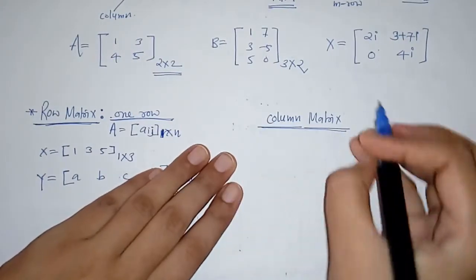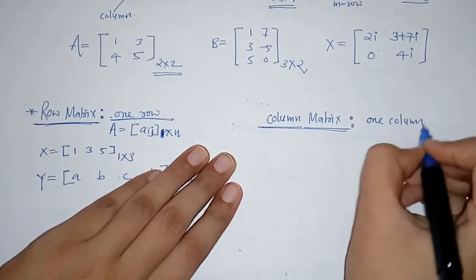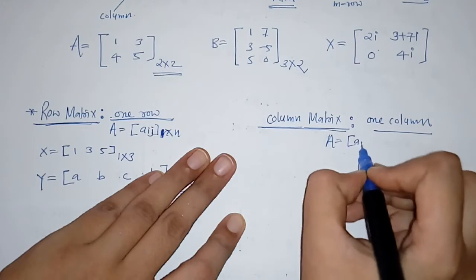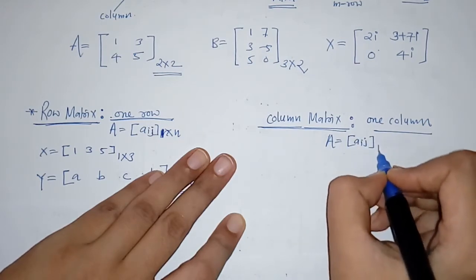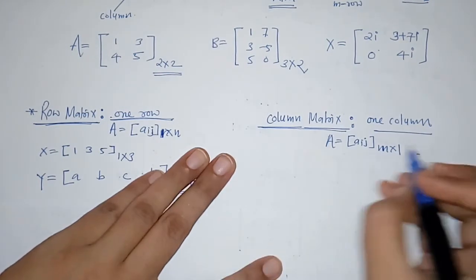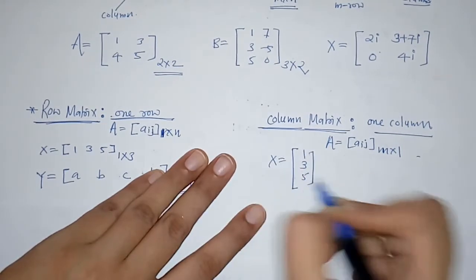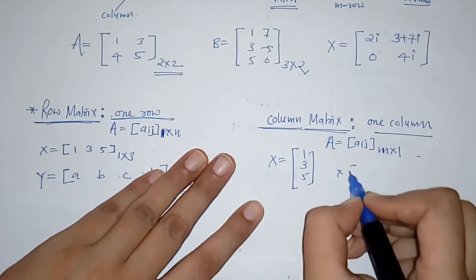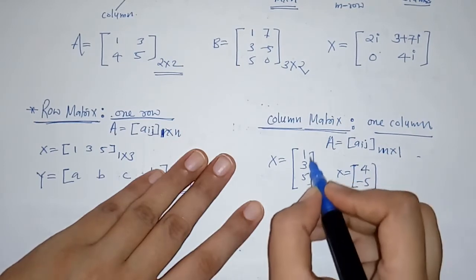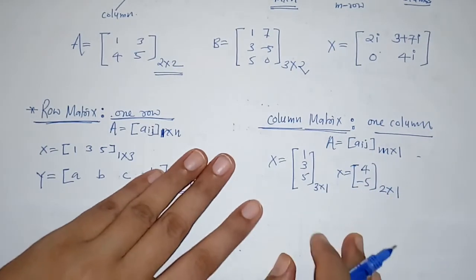Next we have column matrix. A column matrix is a matrix having only one column. In general, we show this matrix as m by 1, where m represents the number of rows and 1 is the number of columns. For example, a column matrix of order 3 by 1 has 3 rows and 1 column, and another of order 2 by 1 has 2 rows and 1 column.